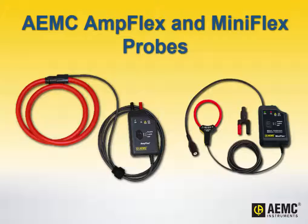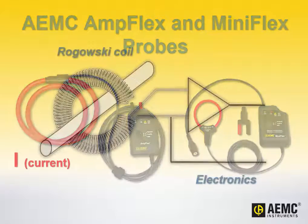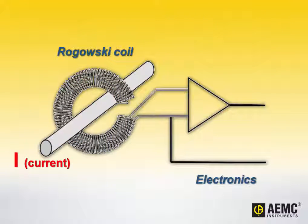Some of these probes include electronics to provide a stronger and linearized output signal. The diagram on the screen illustrates how these probes function. In this diagram, the probe's Rogowski coil has been placed around a conductor.